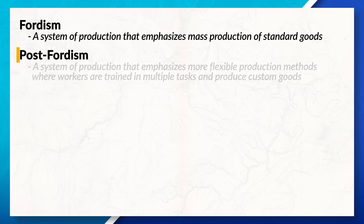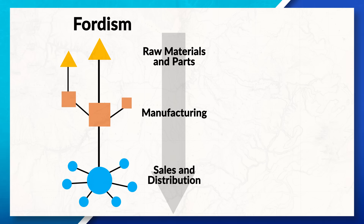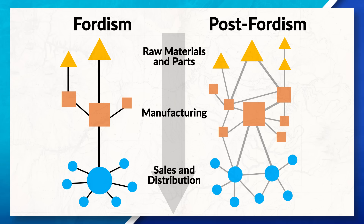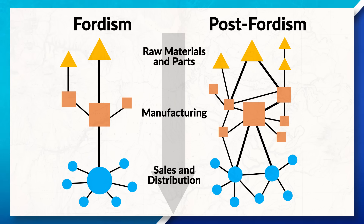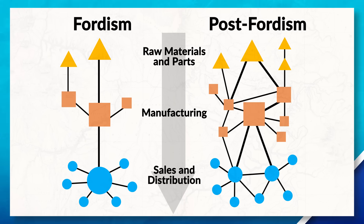Post-Fordism, on the other hand, emphasizes more flexible production methods, which are able to adjust to the daily changes of the market. This production method also has workers trained in multiple tasks and roles to allow for a more adaptable workforce. There is often less of a focus on standard goods and more of a focus on custom goods that meet the specific customer needs and wants.